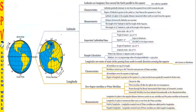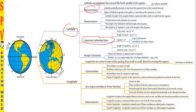Now let's look at the topics we'll cover. For latitude, we'll see its characteristics, measurement, important latitudinal lines, and sample calculations. For longitude, we'll cover characteristics, what the zero degree meridian is, what the prime meridian is, and measurements of longitude.